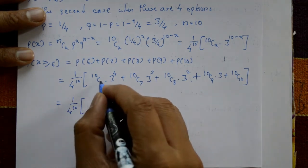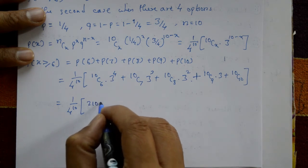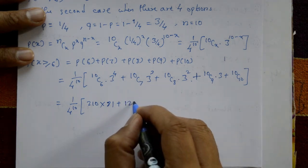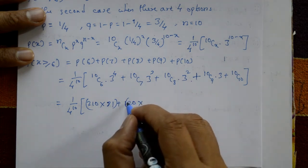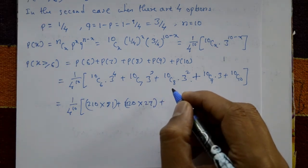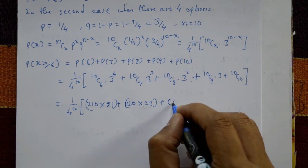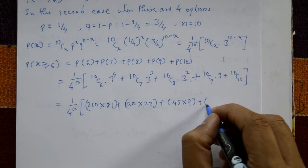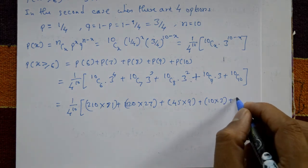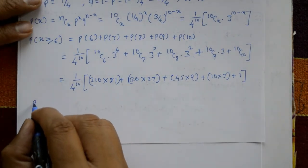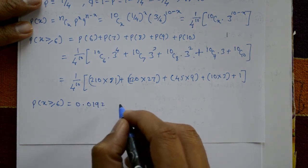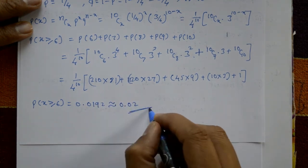Evaluating each term: 10C6 = 210, 3^4 = 81; 10C7 = 120, 3^3 = 27; 10C8 = 45, 3^2 = 9; 10C9 = 10, 3^1 = 3; 10C10 = 1. So P(X ≥ 6) = (1/4)^10 × [210×81 + 120×27 + 45×9 + 10×3 + 1] ≈ 0.0192, or approximately 0.02.